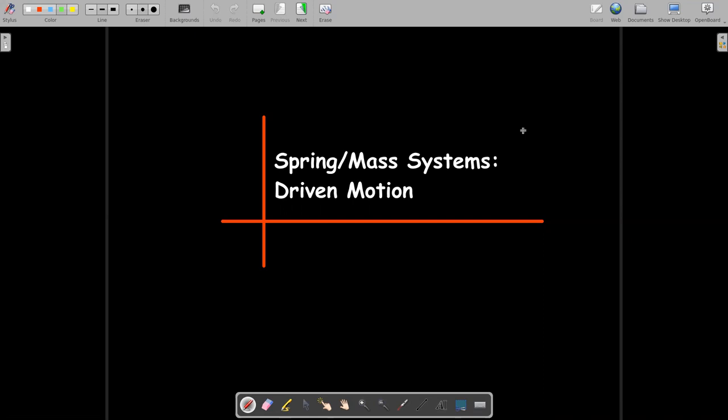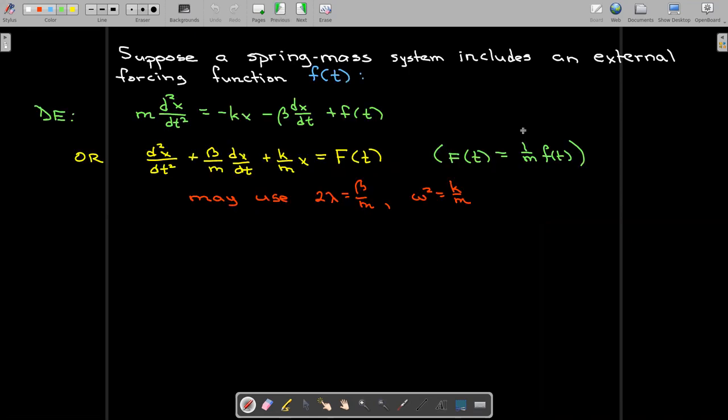In this short video, we're going to look at spring mass systems which have a forcing function. So how does that impact our differential equation, or the equation of motion? Well, in the differential equation, we're going to have to include this external forcing function. And so if I write that in standard form, then we're going to divide that original forcing function by the mass, and we'll call that new forcing function capital F.